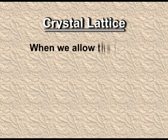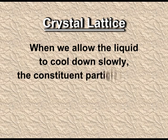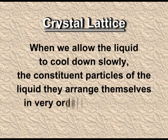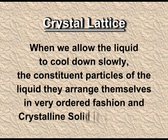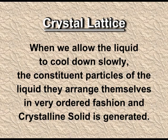Today we will study about the crystal lattice and the types of unit cells. When we allow a liquid to cool down slowly, the constituent particles arrange themselves in a very ordered fashion and a crystalline solid is generated. For example, when we cool water, we get ice. Ice is a crystalline solid made up of small crystals, and this repeating constituent pattern is known as the crystal lattice.